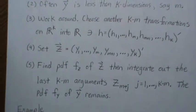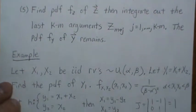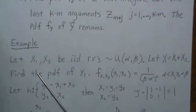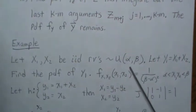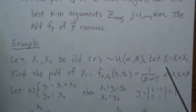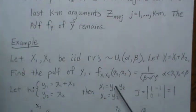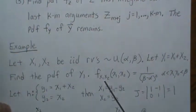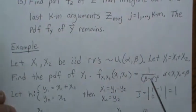Let's do an example — the same one we did two videos ago using the CDF technique. We have two random variables X1 and X2, both uniform on alpha to beta, and we want to find the PDF of Y1 = X1 + X2. Since X1 and X2 are independent, the joint PDF f(x1, x2) is just the product of their individual densities.